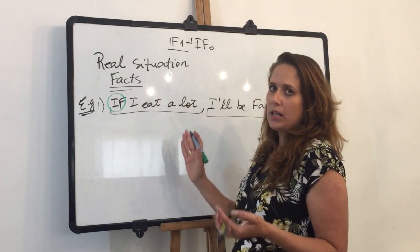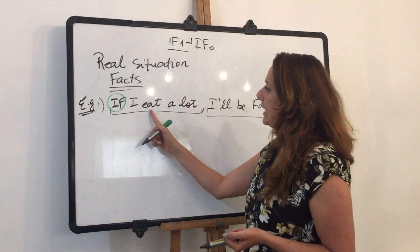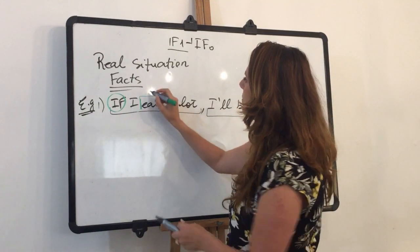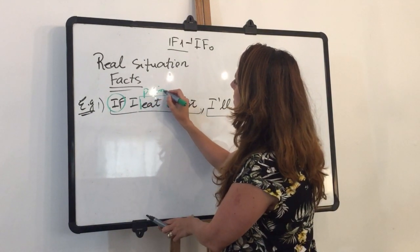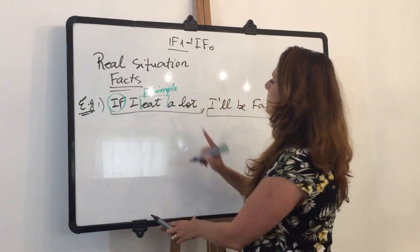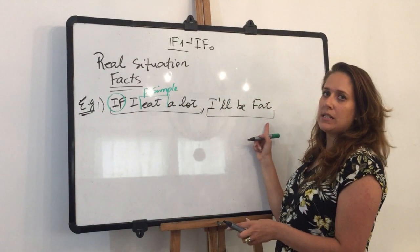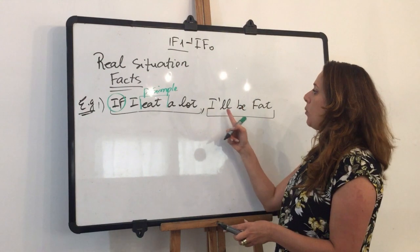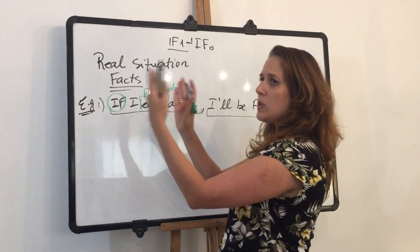I will be fat. This is the second part of the if sentence. This is the result: if I do something, something else will happen—I will be fat.